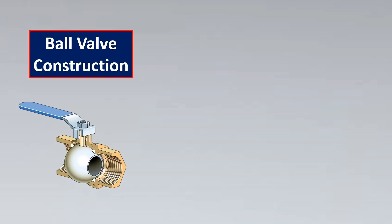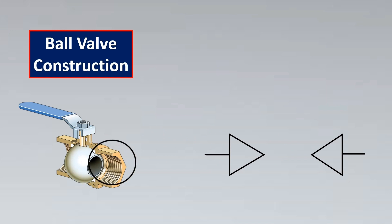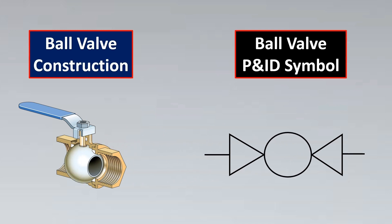The first one is a simple one — the ball valve. The construction of a ball valve is very simple: there is a ball in between which rotates and tries to regulate the flow. So we take the generic valve symbol and put the ball in between. This is the simple ball valve P&ID symbol as per ISA 5.1.